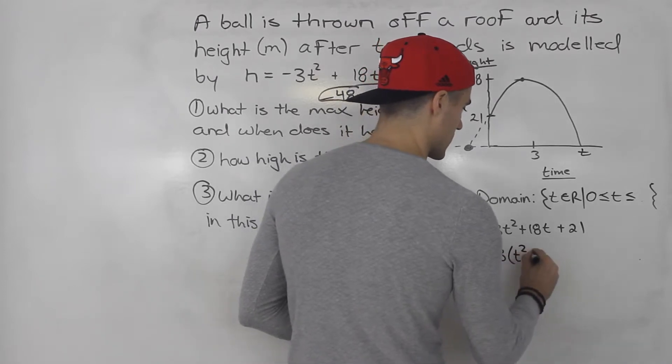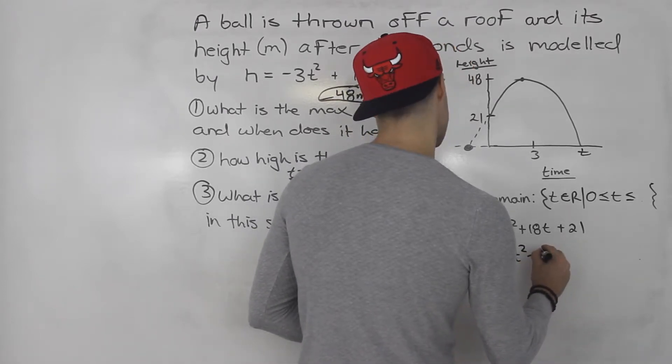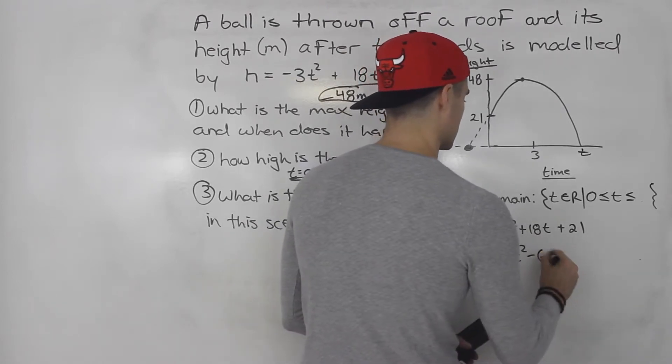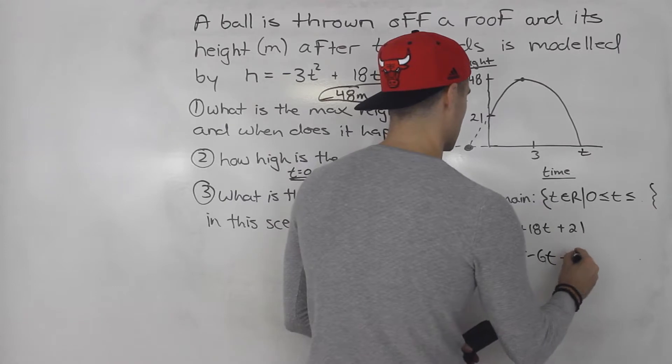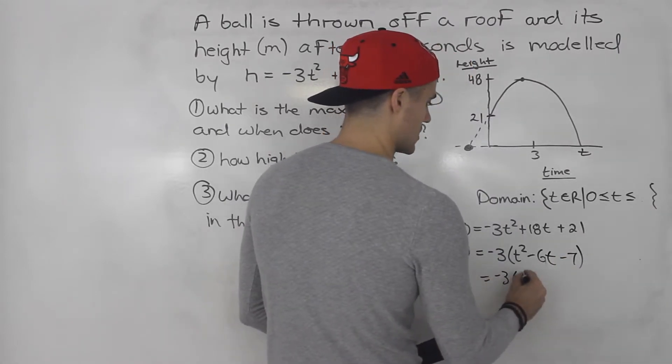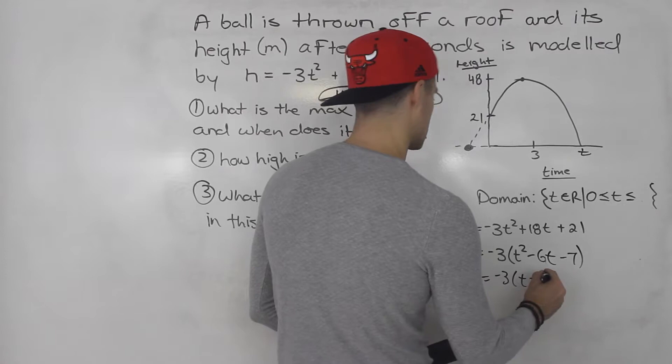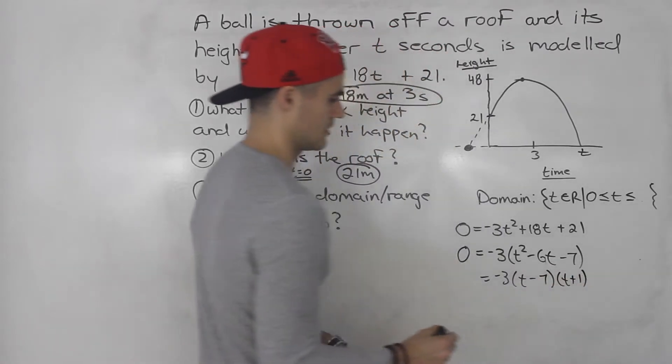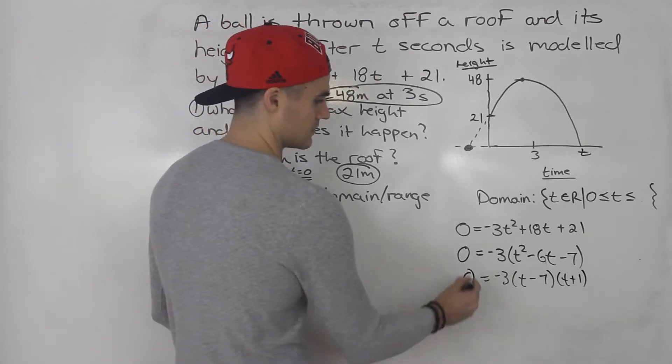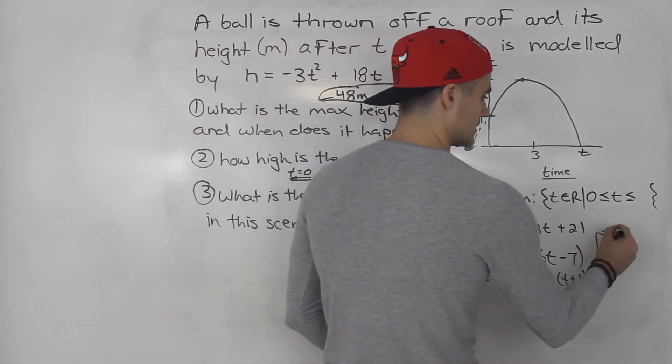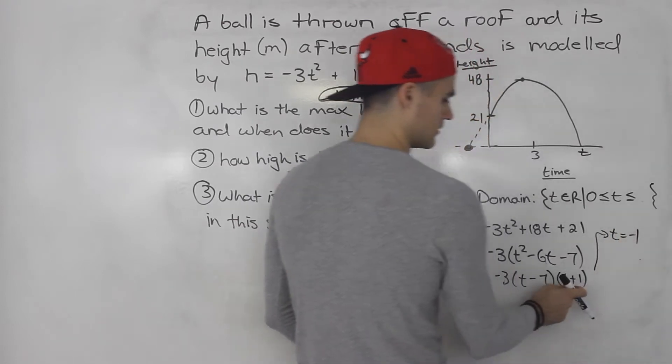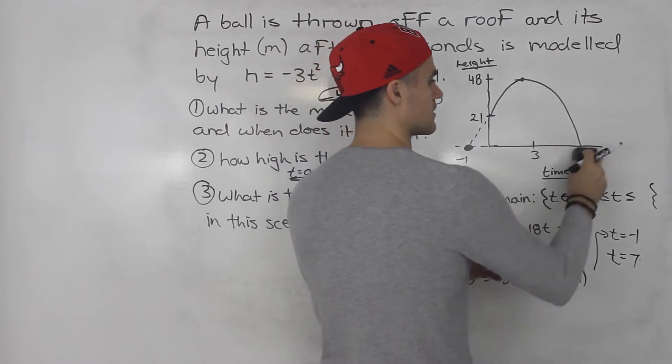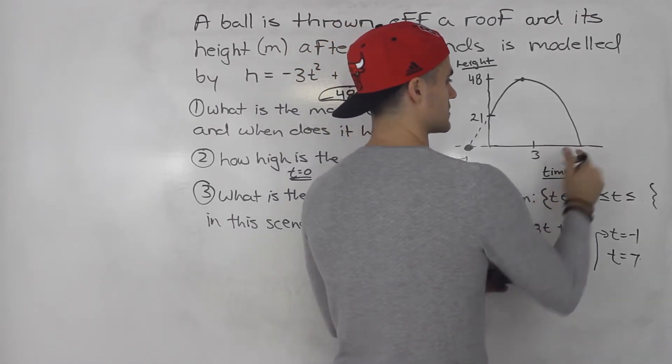So this would be t squared minus 6t minus 7. So this would be negative 3 times t minus 7 times t plus 1. Then from these factors here, it's easy to tell the intercepts are what? t equals negative 1 and then t equals positive 7. So this is negative 1 and this here is positive 7.